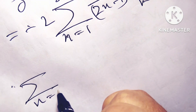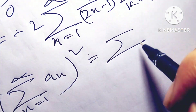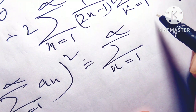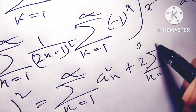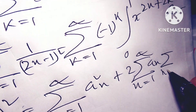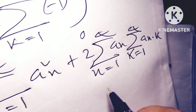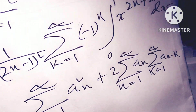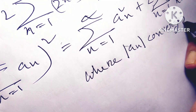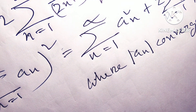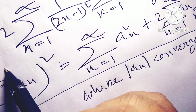Now I utilize the formula: (summation a_n)² equals summation a_n² plus 2 times summation_{n} a_n · summation_{n-k} a_{n-k} for k=1 to infinity, where the series converges absolutely. I apply this property to find out this problem.